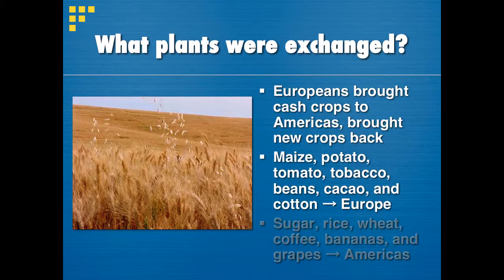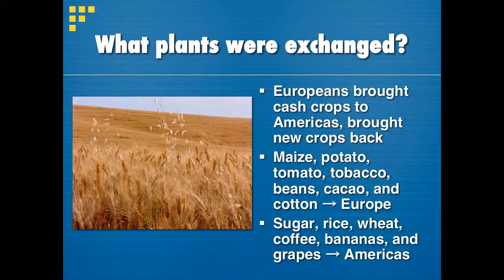From Europe to the Americas came sugar, rice, wheat, coffee, bananas, and grapes — and those things revolutionized life in the Americas. So instead of being isolated on one side of the ocean or the other, all of these things were now found on both sides of the ocean and that changed the entire world. That, my friends, is a big deal.